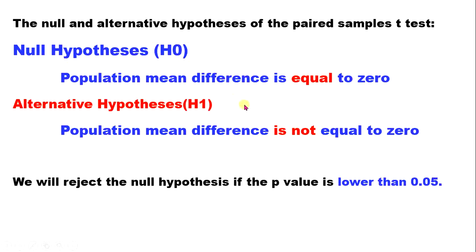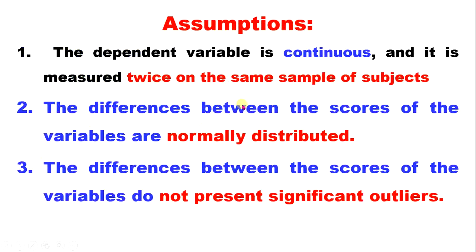These are the assumptions. The dependent variable is continuous, measured twice on the same subject. The difference between the scores of the variables is normally distributed. The difference between the scores of the variables does not present significant outliers.